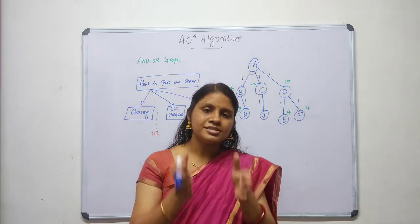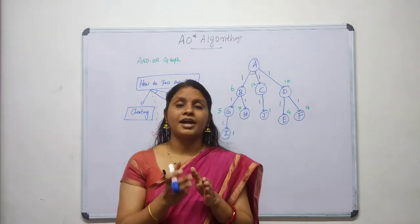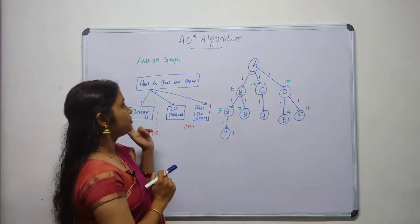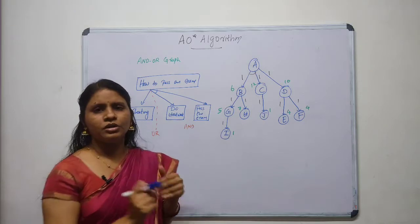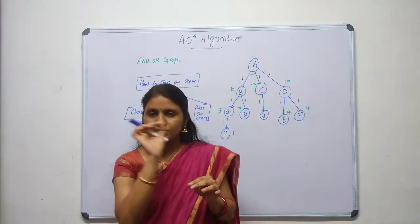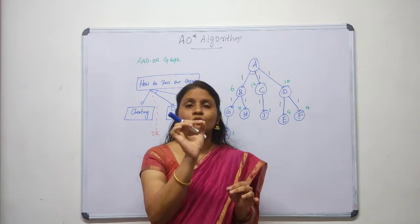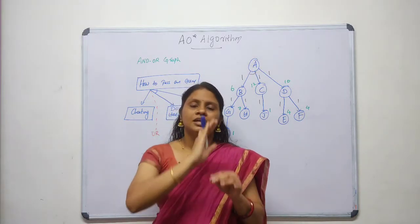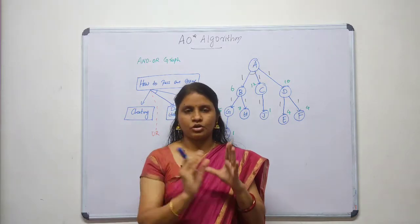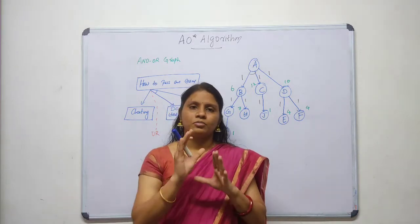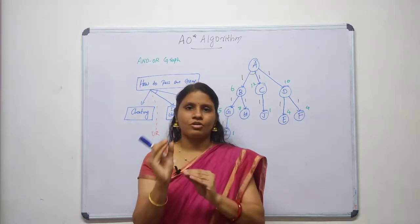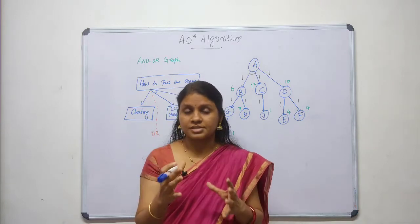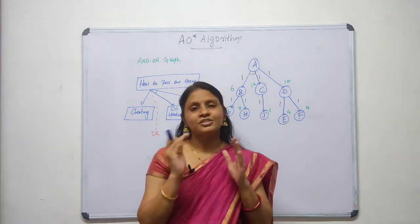So what is the concept behind the AOSTAR algorithm? It uses AND-OR graphs. A stands for AND, O stands for OR — that is AND-OR graph. We are analyzing or creating our problem in the format of AND-OR trees. AND-OR graphs or AND-OR trees can be used for representing the solution.